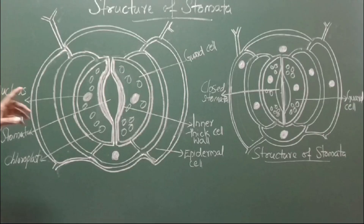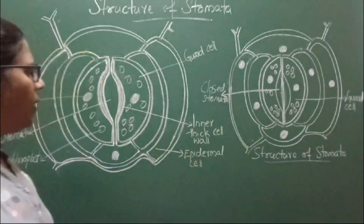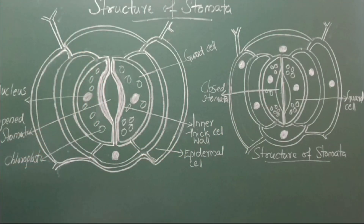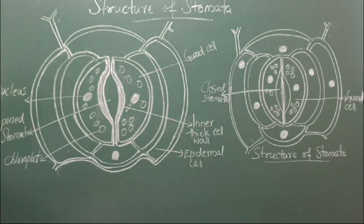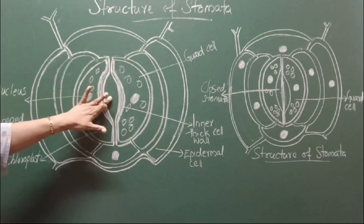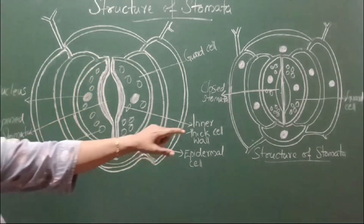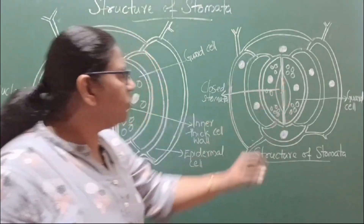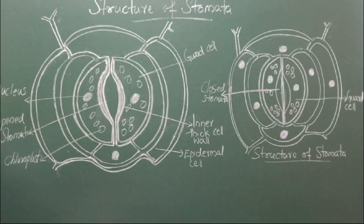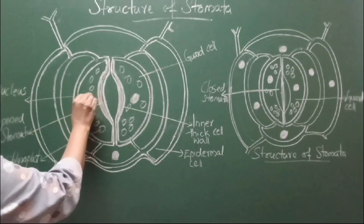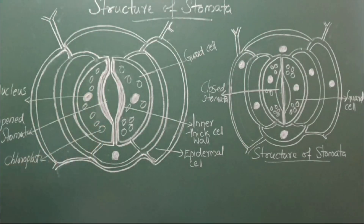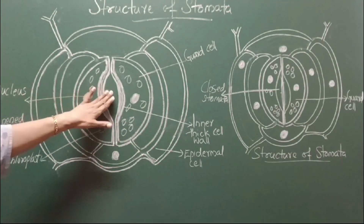Now you can see here the structure of stomata. There are two stomata shown: one is an opened stomata and one is a closed stomata. You can see a gap in the opened stomata, and there is no gap in the closed one. Here you can see the nucleus, and these are the chloroplasts.